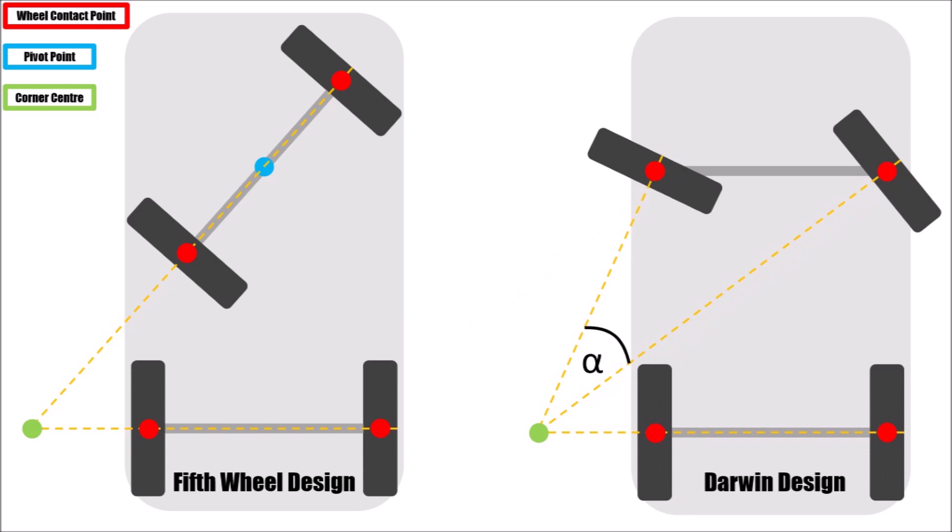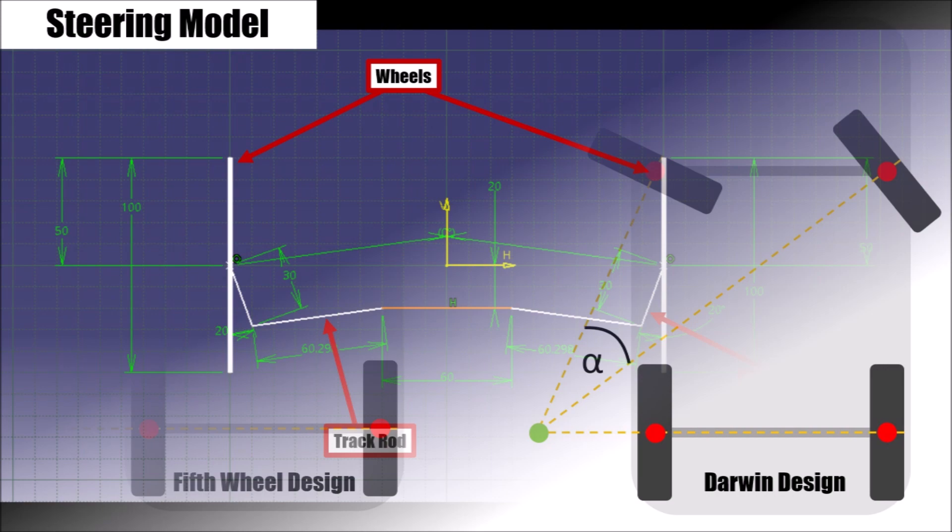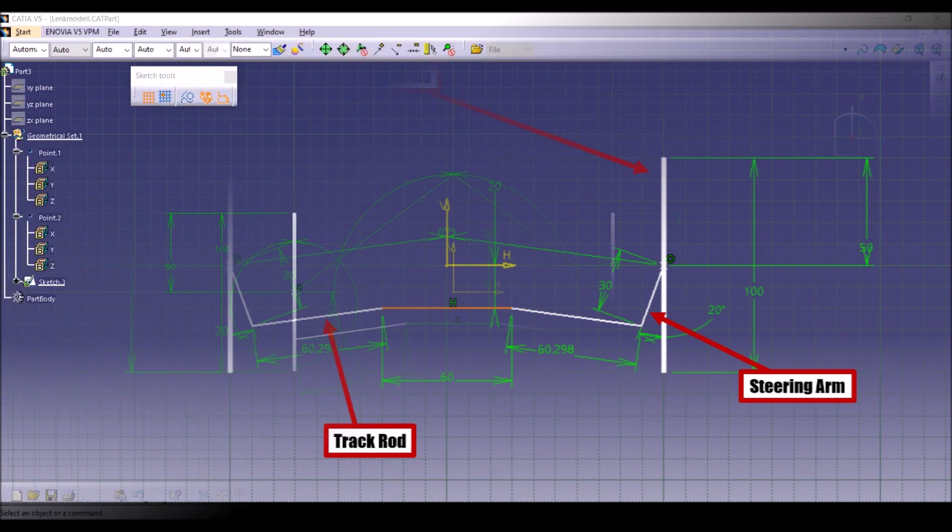Instead of having straight steering arms, they angled them to turn the inner wheel a bit more than the outer wheel. I made a sketch to show you this a bit better.